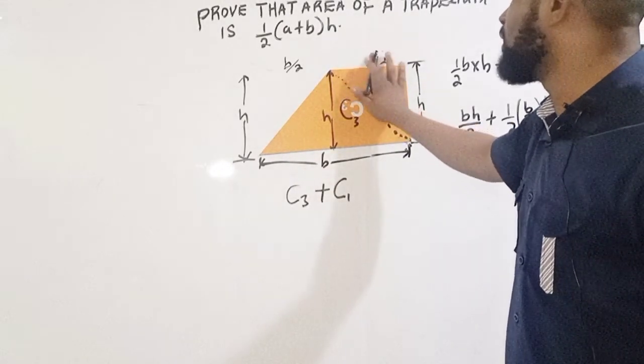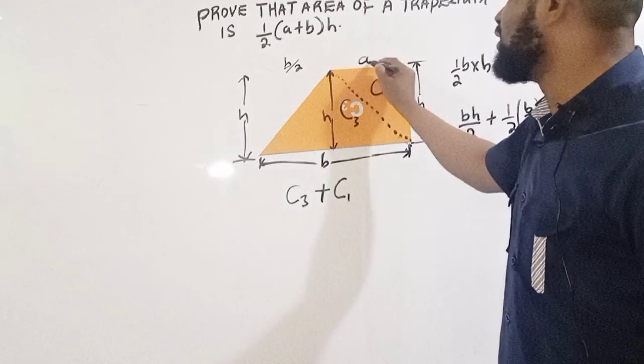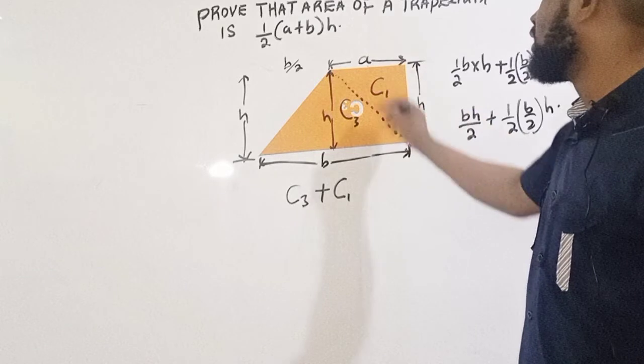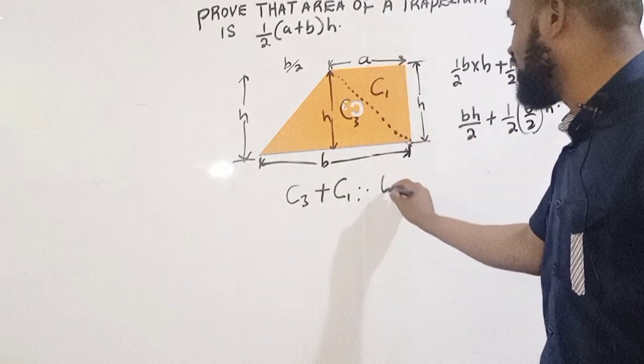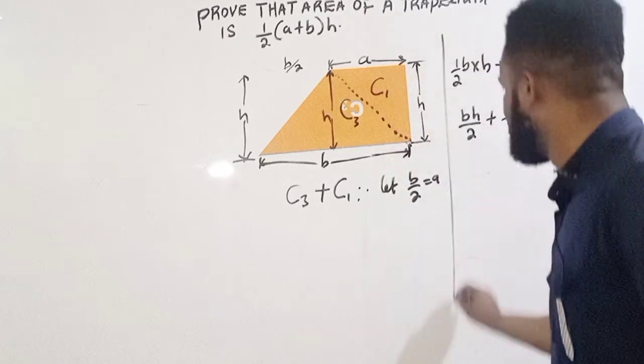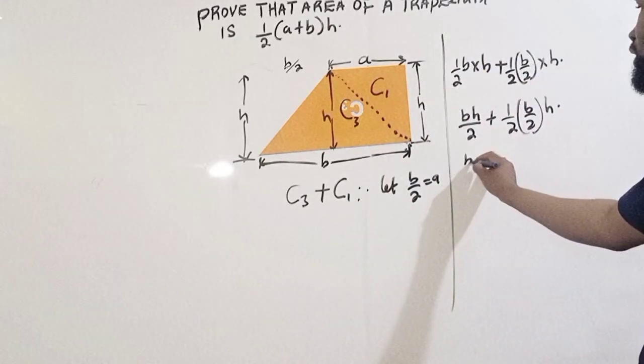The top of a trapezoid is given as a. Therefore, I'm going to say let b over 2 become a. So in this case, I'm going to say b over 2 for this triangle here, here, and here is for this one.